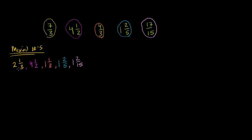We already know the largest number just by looking at the whole number parts: it's 4 and 1/2, and the second largest is 2 and 1/3. The whole number part of the remaining three is all the same — 1 — so we now have to look at the fractional parts. They all have different denominators, so to compare apples to apples, let's give them the same denominator. The least common multiple of 3, 5, and 15 is 15.